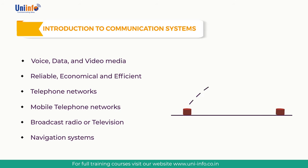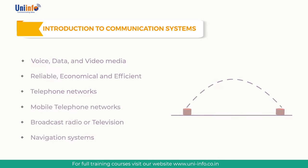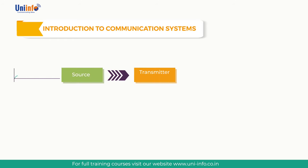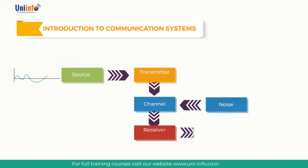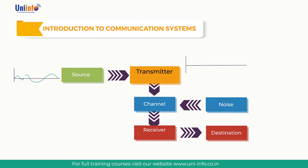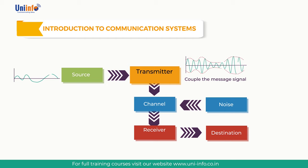Communication is a transfer of information from one point in space and time to another point. Please refer to the block diagram presented here. A transmitter is used to couple the message signal to the transmission medium, that is, the channel. The transmitter may simply filter, amplify, and couple the signal to the medium, or it may impose the message signal on a higher frequency carrier wave. Use of a higher frequency carrier facilitates wireless radio transmission.